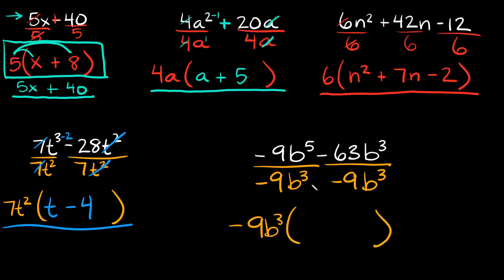Pull out negative 9b cubed and draw the parentheses. The negative 9's cancel. For b to the fifth divided by b cubed: subtract the exponents, 5 minus 3 equals 2, so we get b squared. Then negative 63 divided by negative 9: a negative divided by a negative is positive, and 63 divided by 9 is 7, giving us positive 7. The b cubed on top and bottom cancel. So the final answer is negative 9b cubed times the quantity b squared plus 7.